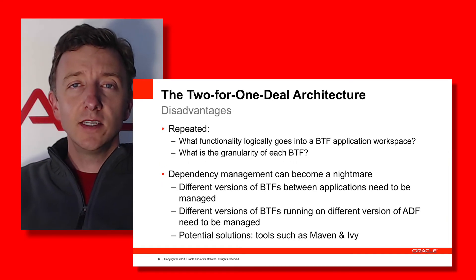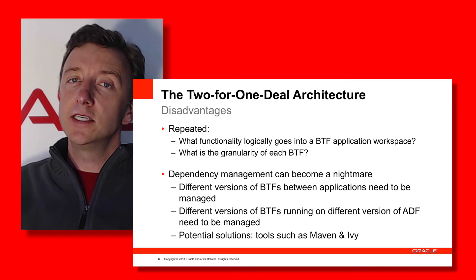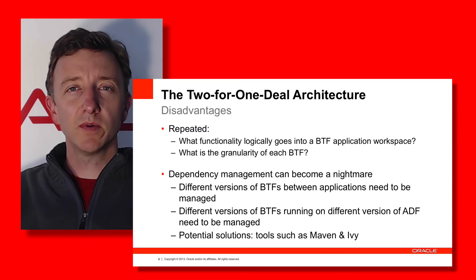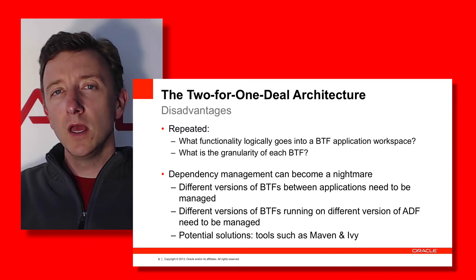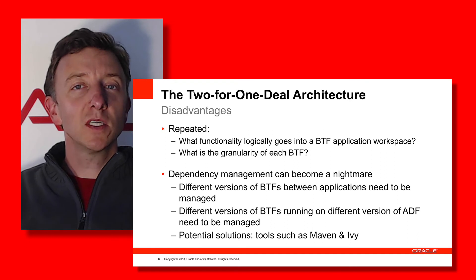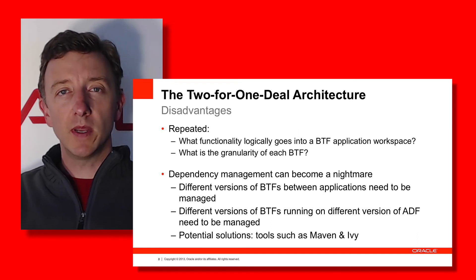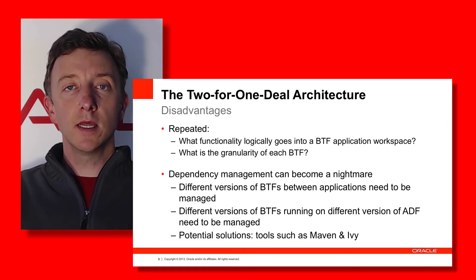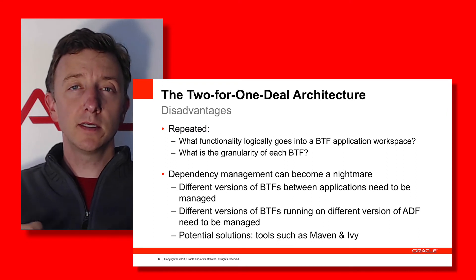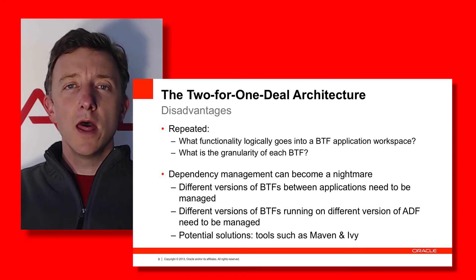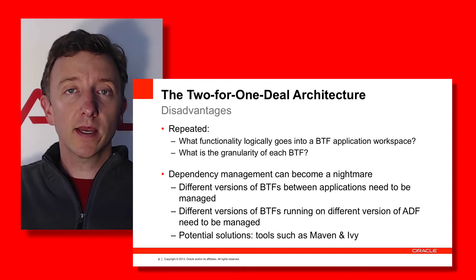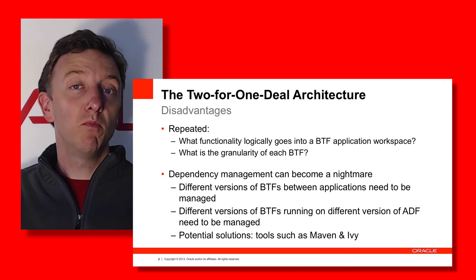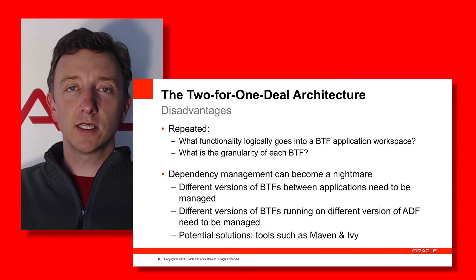The disadvantages of the two-for-one deal include those of the sum of the parts — see the previous episode for those. A stronger disadvantage here is dependency management and versioning. With a master workspace dependent on BTF workspaces, which depend on a common workspace, you need to check out, build, and deploy everything in the right order. This is far more complex than patterns with a single workspace.